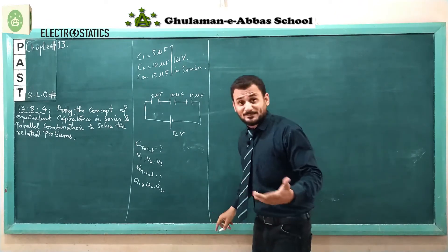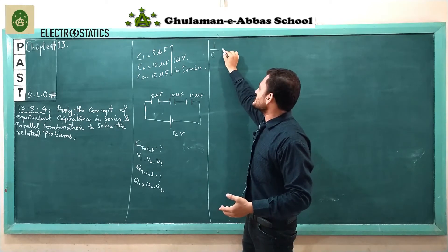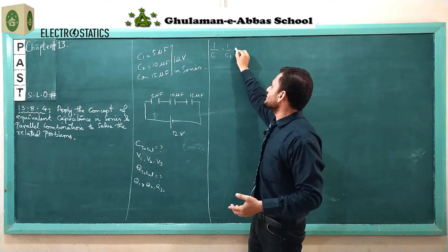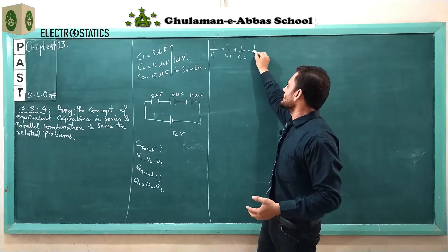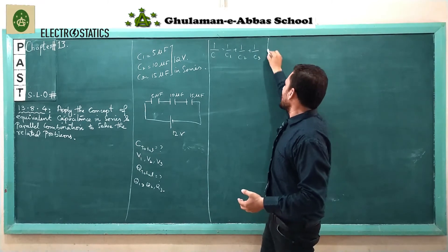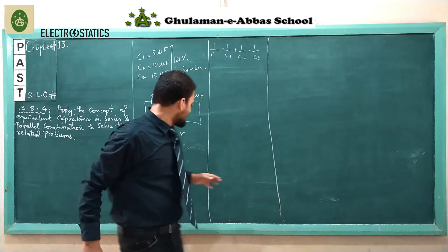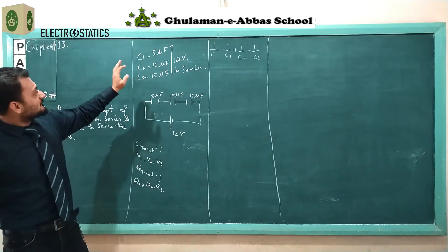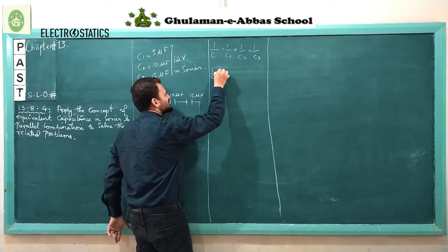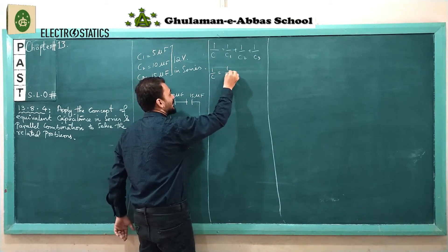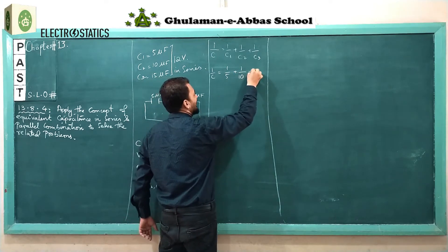We need to calculate the voltages at each capacitor. First, using the formula — we know that in series combination the total capacitance is equal to the reciprocal of the sum of all the capacitances. So the formula for series combination is: 1/C = 1/C1 + 1/C2 + 1/C3. Values given are 5, 10, and 15 microfarad, so: 1/C = 1/5 + 1/10 + 1/15 microfarad.